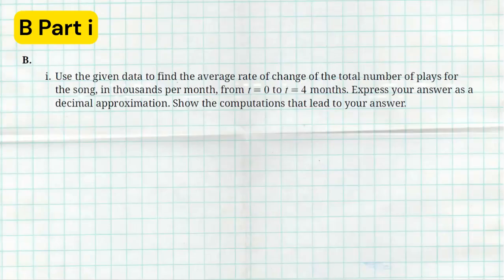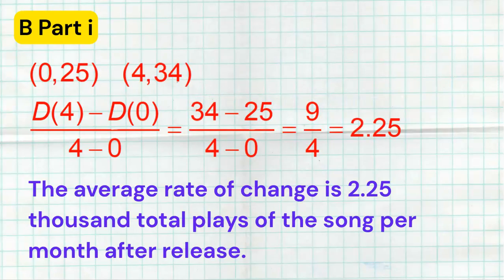Part one says, use the given data to find the average rate of change of the total number of plays for the song in thousands per month from zero to four. They want us to express our answer as a decimal approximation and show all of our work. So basically, we're finding the rate of change, the average rate of change between these two points.